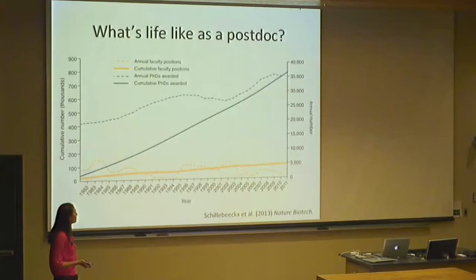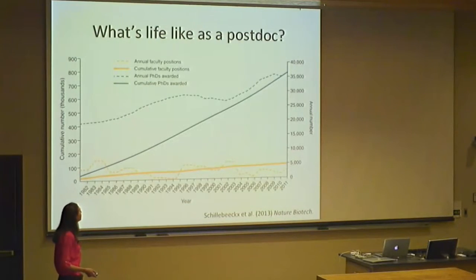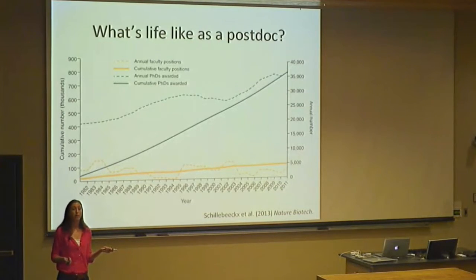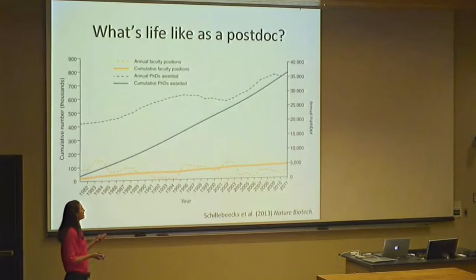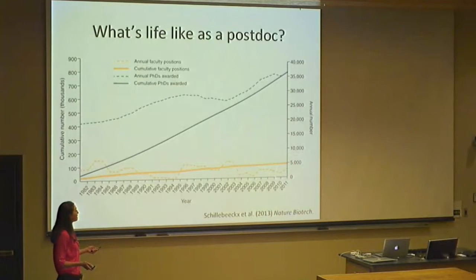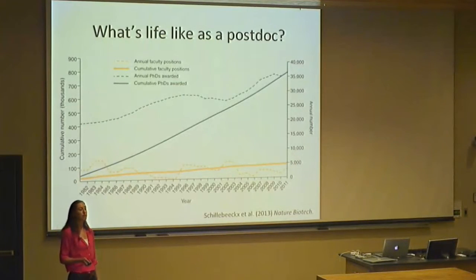Given how competitive it can be to get a job in any field, here's a statistic I think is important to be aware of. This graph from Nature Biotechnology shows the number of PhD students graduating every year versus the number of faculty positions available each year. Based on these numbers, only about 10% of PhDs who graduate each year end up in a faculty position. This doesn't mean every PhD wants a faculty position — there are tons of other career options. But if you choose the tenure track, it's competitive, and it's important to keep those things in mind so you can decide what compromises you're willing to make for your career.